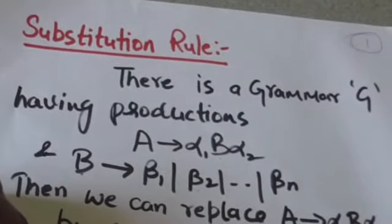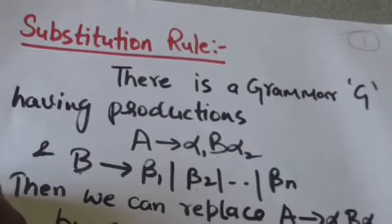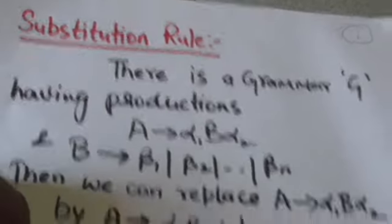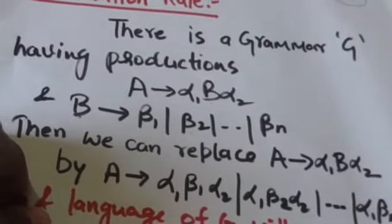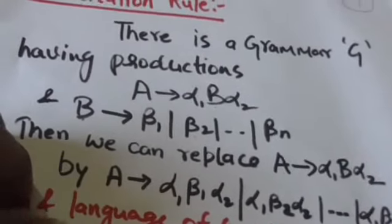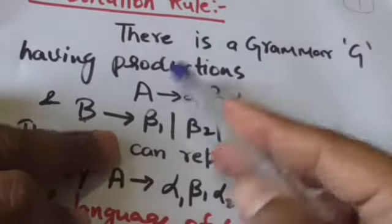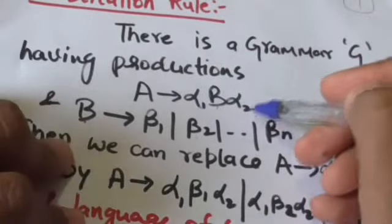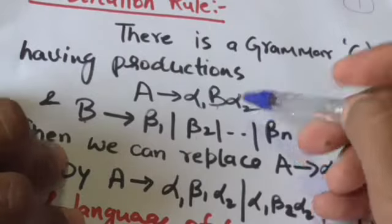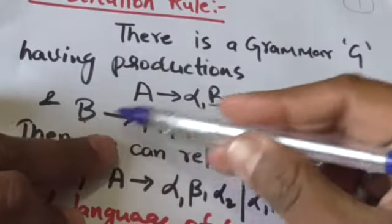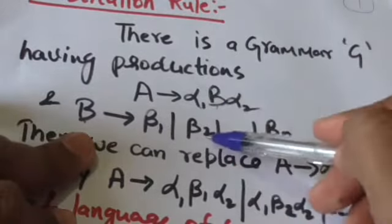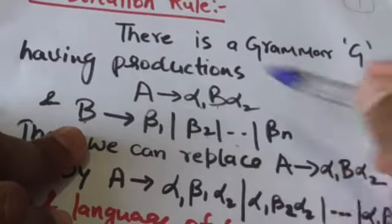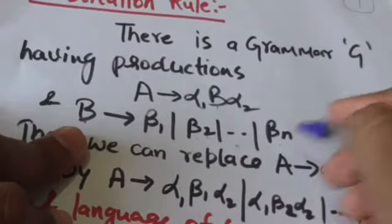Hello friends, welcome back. In this tutorial we will study about the substitution rule. Suppose there is a grammar G having productions: A derives alpha_1 B alpha_2, and B derives beta_1, B derives beta_2, B derives beta_3, up to B derives beta_n.